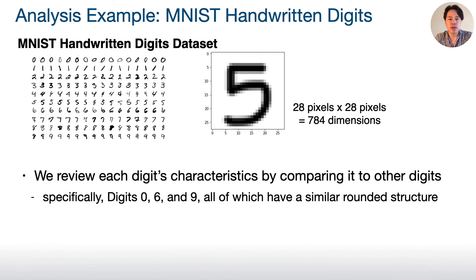Now, I will demonstrate our framework's unique capability using the MNIST handwritten dataset. From this dataset, we compare digits 0, 6, and 9 and review their characteristics.